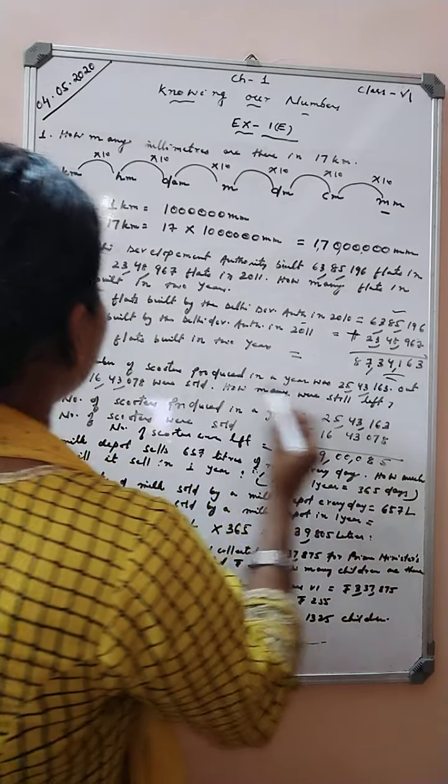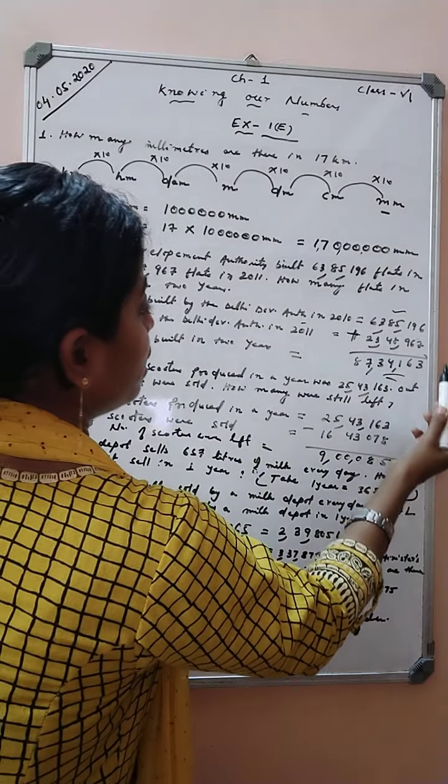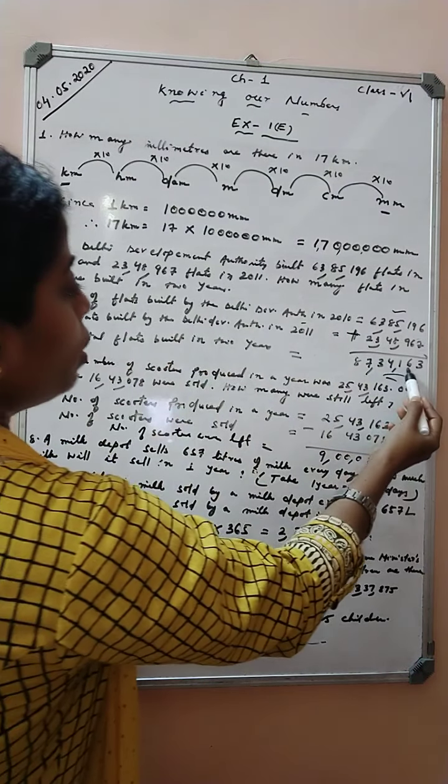We will get 87,34,163 flats. This much flats were built in 2 years.